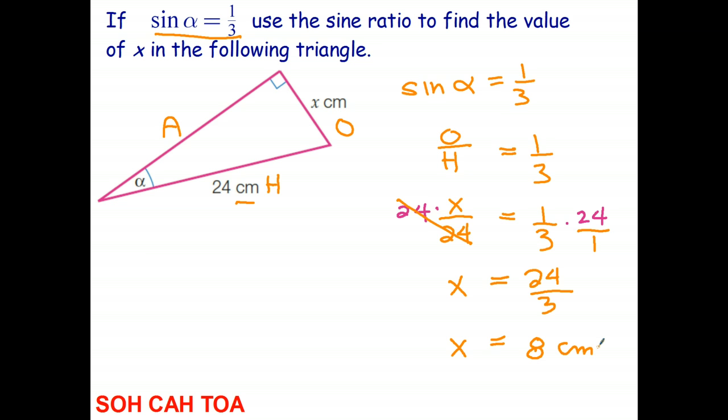So just summarizing, I'm looking for the length of this unknown side. And I know the ratio of that side to that side, the opposite to the hypotenuse, is one-third. So I'm able to set up an equation and then solve to find the length of the unknown side.